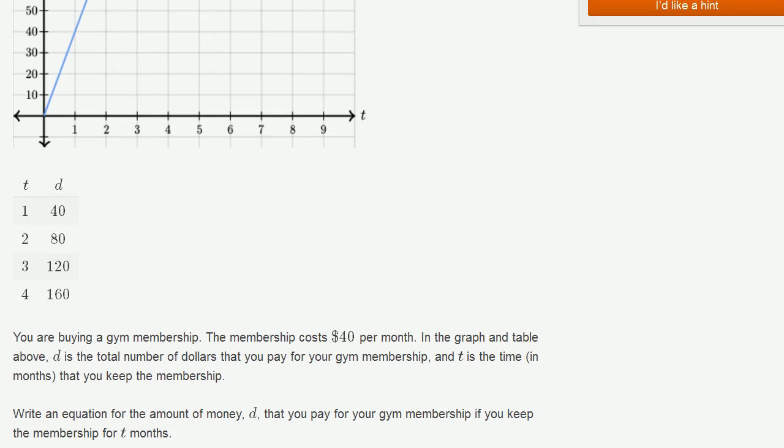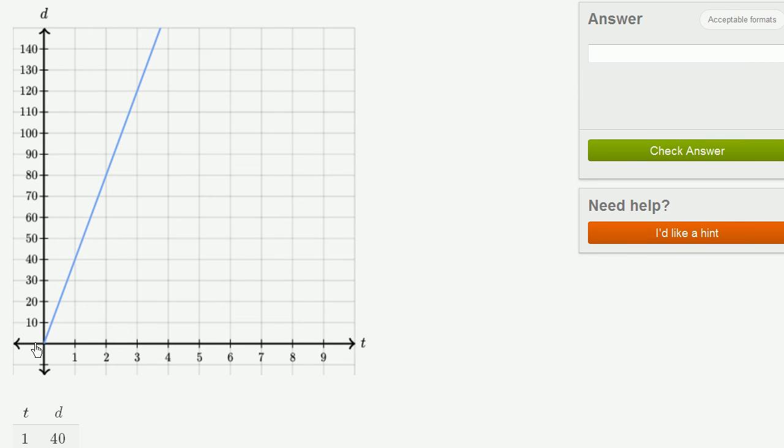You see that in the graph right over here. If you have zero months, you pay nothing. Then one month, $40. The next month, another $40, getting you to $80.